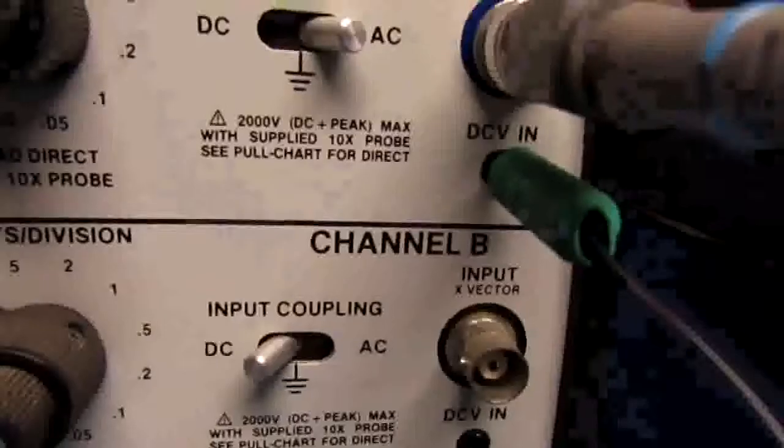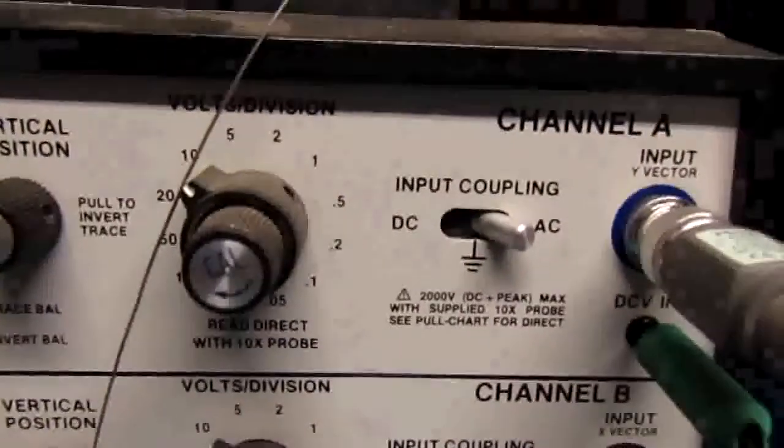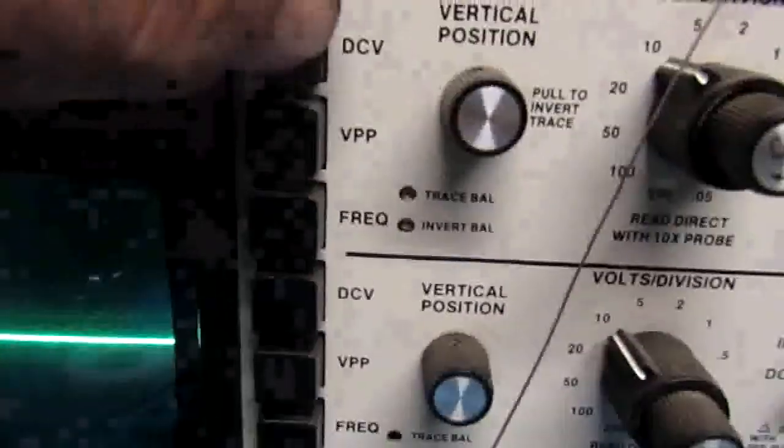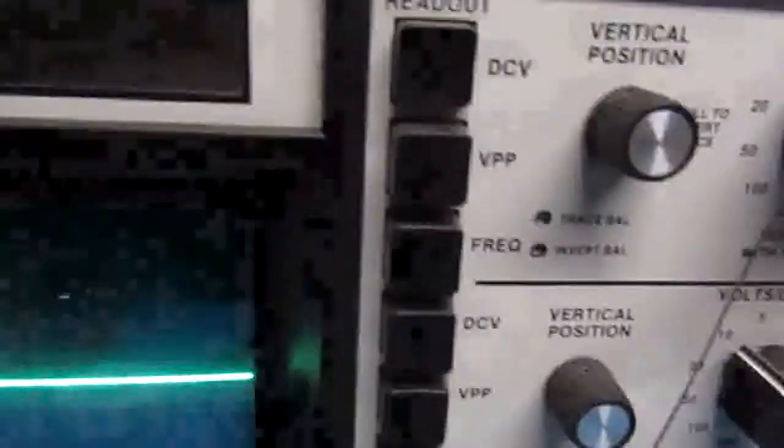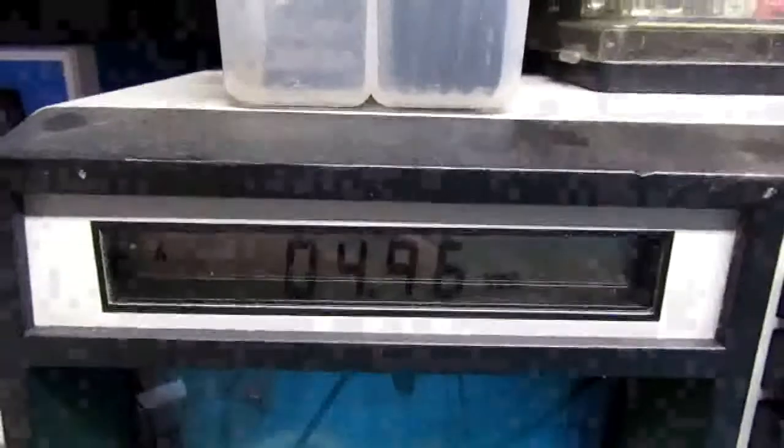And we're hooked up to channel A. Gotta have the DC plugged in or it will not read. You do not have to have this on DC coupling. Now over here you want the DC volts button pushed. And right now we're just under 5 volts.